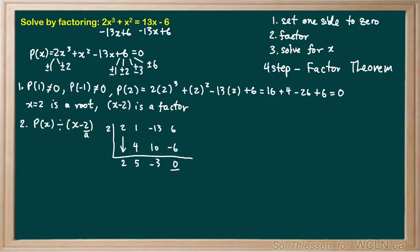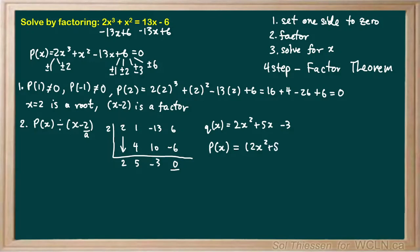Interpreting our result: we have a constant term of negative 3, an x-term coefficient of 5, and an x squared term coefficient of 2. So our quotient q of x is 2x squared plus 5x minus 3. We can rewrite our original polynomial as the product of this quotient and the factor we just found.